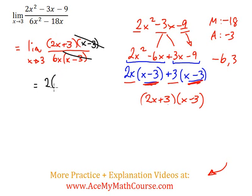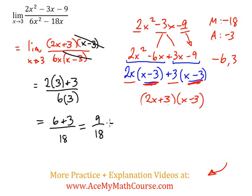So I get 2 times 3 plus 3 over 6 times 3. 2 times 3 is 6, plus 3. All over 6 times 3, which is 18. 6 plus 3 is 9 over 18. And this can be simplified to one half.